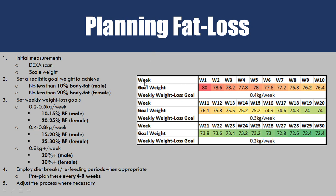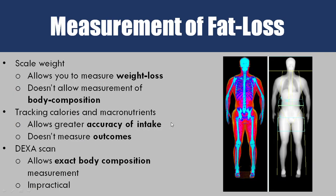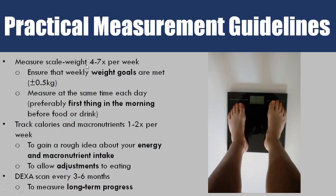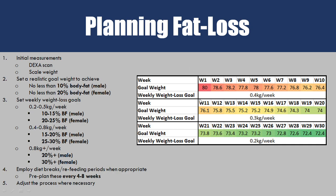So how do we plan our fat loss? I've got a few steps here that outline this process. First, we take an initial measurement — our scale weight and a DEXA scan — so we have a starting body weight, body fat percentage, and muscle mass. From there, we need to set a realistic goal weight to achieve. For example, if we're 80 kilos, we might want to get to 72 kilos, based on how much fat the DEXA scan reveals.